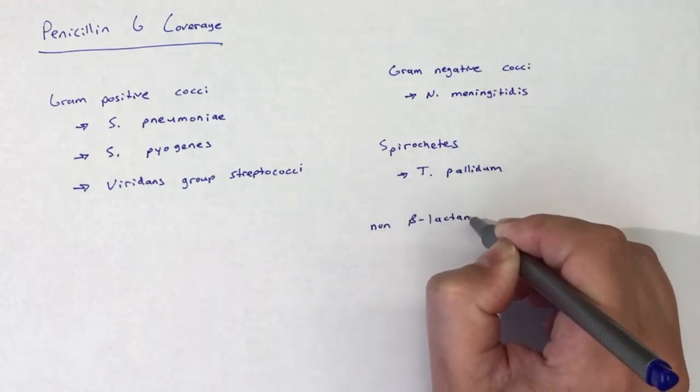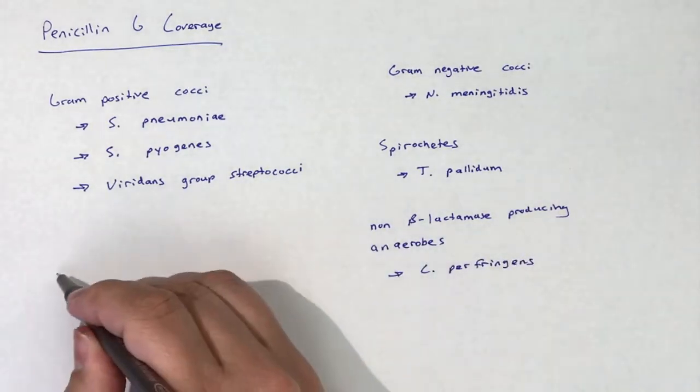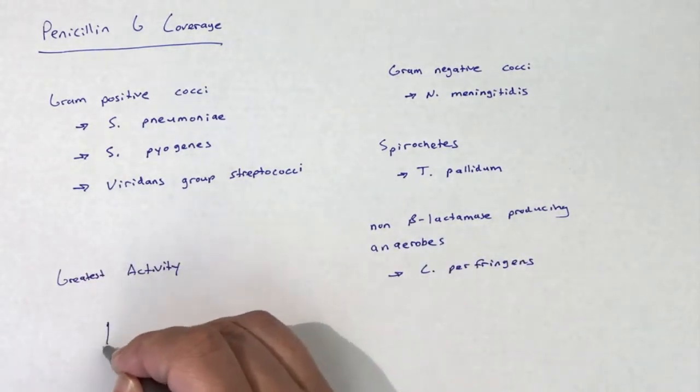spirochetes, including T. pallidum, and non-beta-lactamase-producing anaerobes, including C. perfringens, are susceptible to penicillin G.